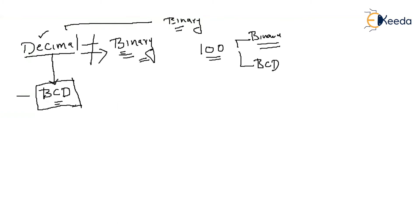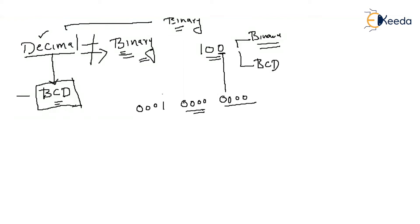In binary, the number 100 is obtained through repeated division by two. But in BCD, you don't need to convert; you find the corresponding binary value of each digit directly. Each digit is represented with four binary digits. So 0 becomes 0000, another 0 becomes 0000, and 1 becomes 0001. Every digit in a decimal number is represented by its own four-digit binary code.